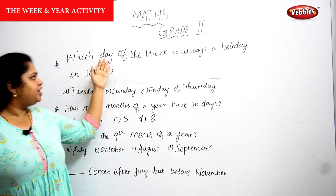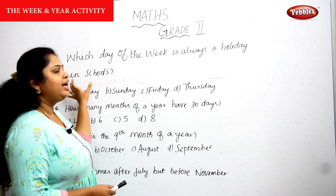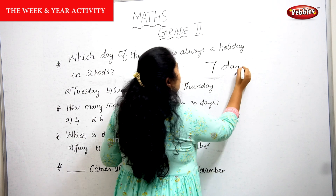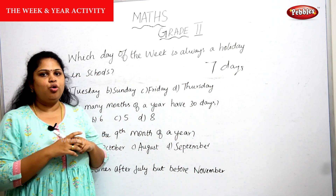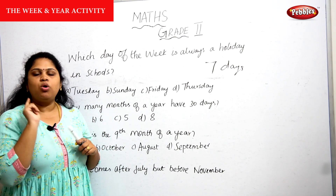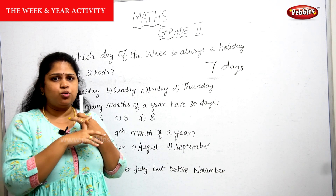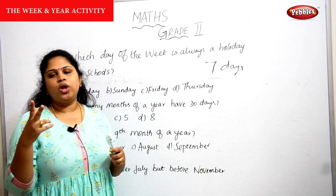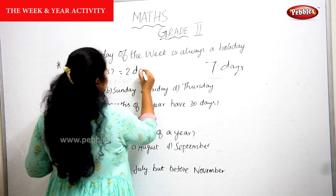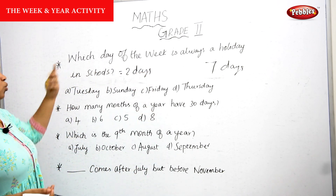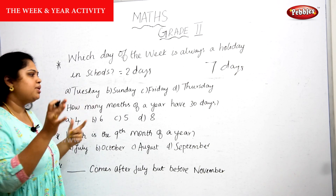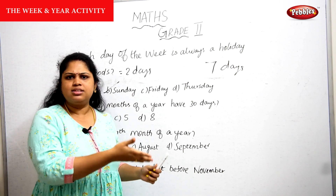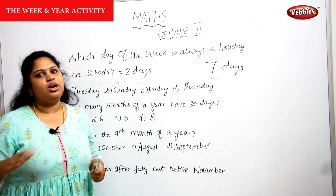Next question: which day of the week is always a holiday in school? We have 7 days — 5 working days and 2 holidays. The 2 holiday days are Saturday and Sunday. Sometimes Saturday has a half-day school, but Sunday is a compulsory holiday for every school. So the answer is Sunday.